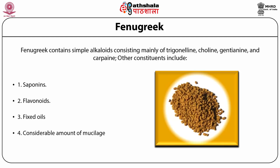Considerable amount of mucilage, which appears to be mostly a galactomannan and is probably responsible for swelling of the seed in water. Protein about 23 to 25%, which is low in sulfur amino acids but high in lysine and tryptophan. Other constituents include free amino acids including 4-hydroxyisoleucine, histidine, lysine, and arginine. Vitamins, especially vitamin A, B1, and C. Minerals, especially calcium and iron. Volatile components, more than 50, which include N-alkanes, sesquiterpenes, and oxygenated compounds.